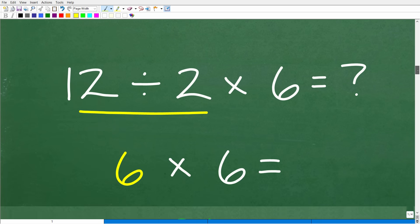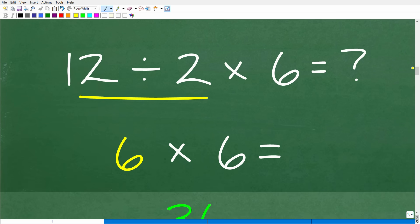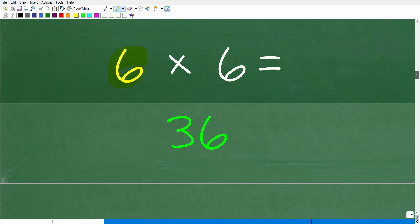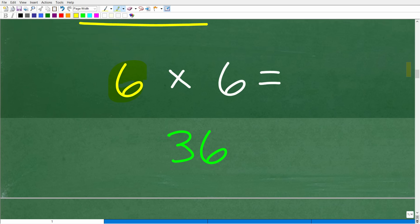Let's go ahead and finish this up because this is now pretty easy. Now that we know that we have to do division first and not multiplication, this is just 12 divided by 2, which, of course, is 6. And then we're going to finish up with multiplication because that's the only thing we have left to do. So 6 times 6, of course, is 36.